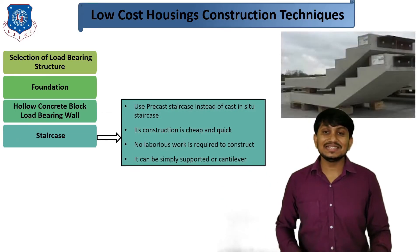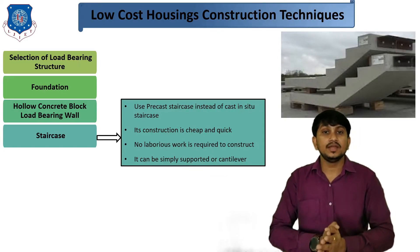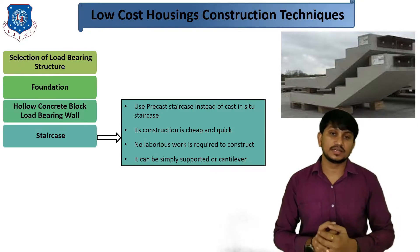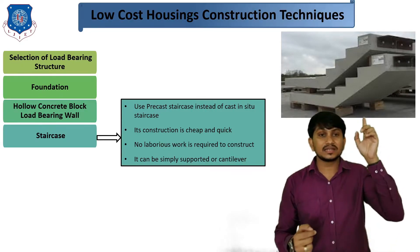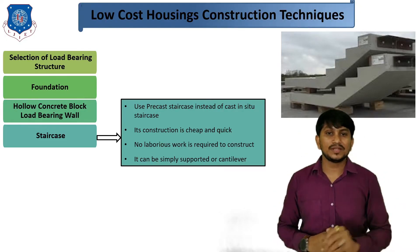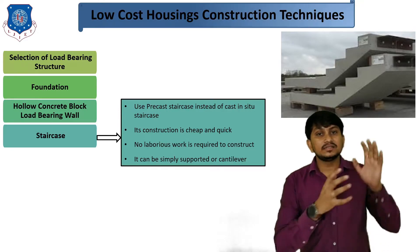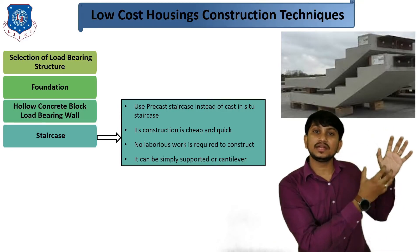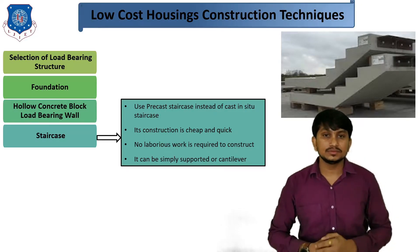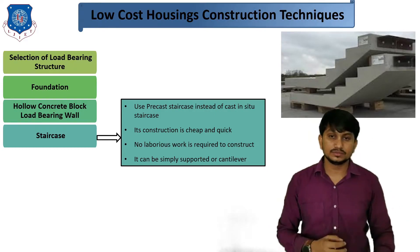Fourth technique is staircase. In staircase, how you can achieve economy — use precast staircase instead of cast-in-situ staircase. You just buy the staircase and install it in your house. Its construction is cheap and quick because they are made in an industry under controlled conditions. No formwork is required at the construction site. It can be simply supported or cantilevered.